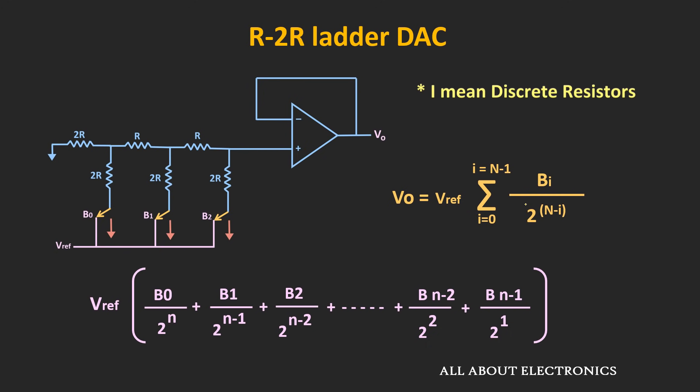By connecting the resistors in this ladder form, we can design this type of DAC, but the values of resistors should closely match each other. Any mismatch can produce errors in the output voltage. When these resistors are fabricated in an IC itself, their values are closely matched, making it possible to achieve higher resolution. Commercially, these types of DACs are available from 6 bits to 20 bits.